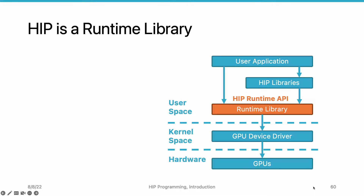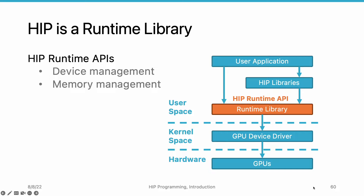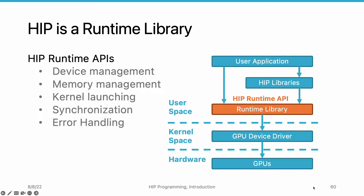Finally, we say that HIP is a runtime library. The runtime library is mainly for the host program that runs on the CPU. HIP provides a set of APIs for programmers to control the GPUs. With the API, programmers can perform tasks related to device management, memory management, kernel launching and synchronization, and error handling. As we see in the figure on the right, the HIP runtime library and API serve a central role in applications written with HIP. Both user applications and libraries can call the runtime library to control the GPUs. The runtime library will connect with the driver, and the driver will eventually communicate with the GPUs.